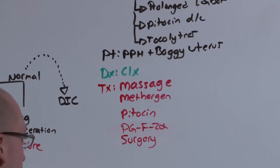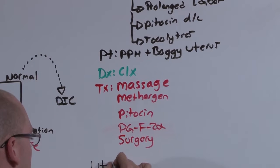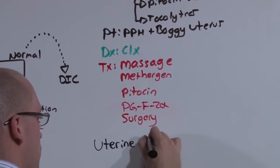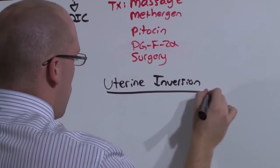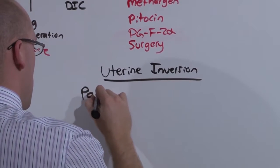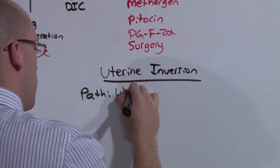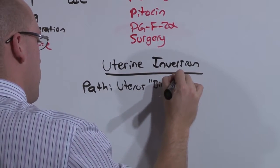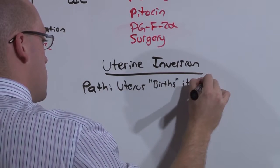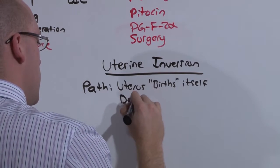Now let's talk about uterine inversion. This is a problem where the uterus essentially births itself. It's caused by a defect in the myometrium.